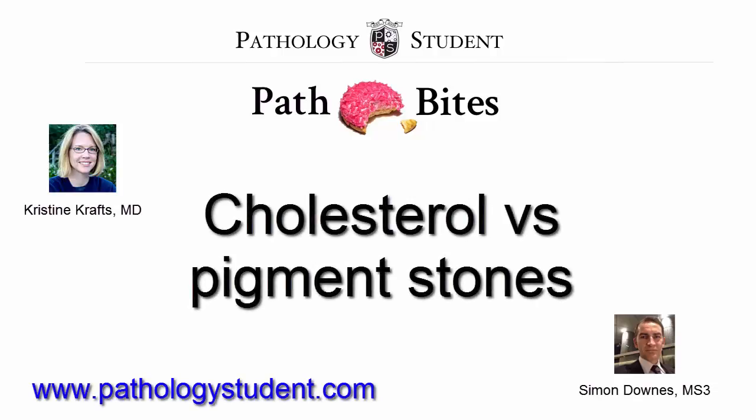There are a couple types of gallstones: cholesterol stones and pigment stones. Cholesterol stones arise only in the gallbladder and are composed of cholesterol, with amounts ranging from 50% to 100%. They are usually radiolucent when composed mostly of cholesterol. Only around 10 to 20 percent of cholesterol stones have enough calcium carbonate to make them radiopaque.